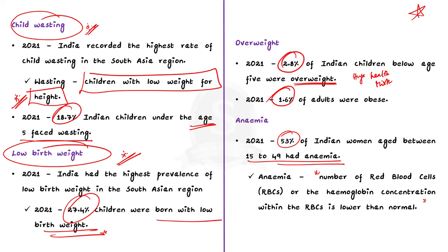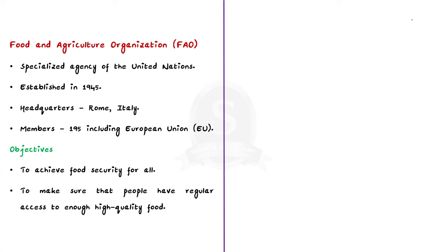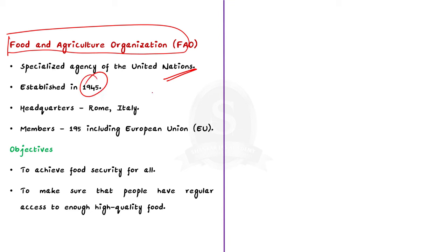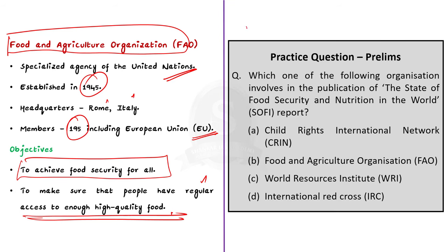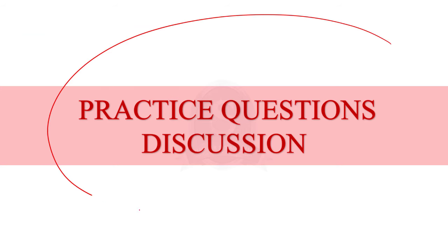Kindly note and revise all these statistics as they are very relevant for your mains examination. FAO is a specialized agency of the United Nations, established in 1945 and headquartered in Rome, Italy. The FAO comprises over 195 member states including the European Union. The main objective of FAO is to achieve food security for all and to make sure that people have regular access to enough high quality food in order to live healthy and active lives — simply put, FAO leads the international efforts to defeat hunger. Now let us move on to the next part of our video: preliminary practice questions.